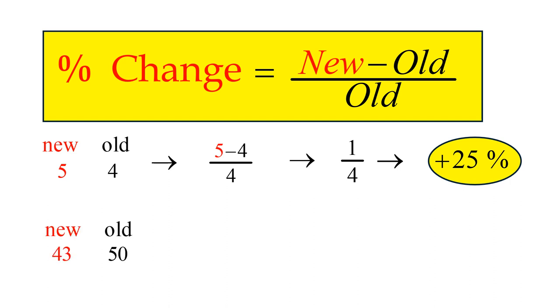In our final example, the new value is 7 less than the old value of 50, negative 7 divided by 50, the percentage change is negative 14%.